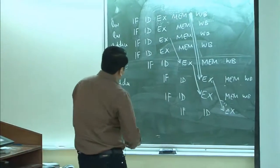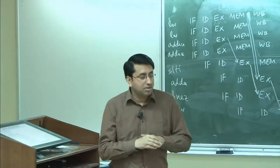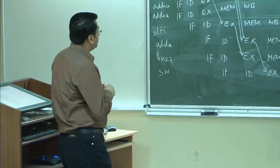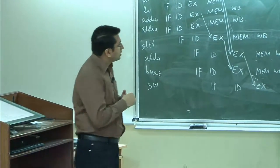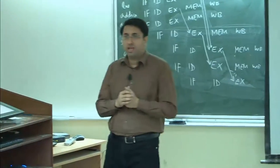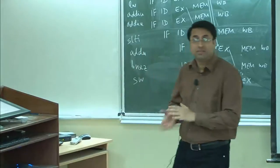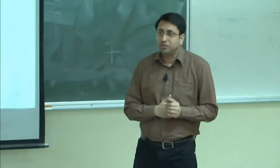That is pretty much just the best we can do, even if I give you the freedom of executing an unlimited number of instructions every cycle. The question is: how can we go beyond this? Can we, or is it the theoretical limit? Given this particular loop which executes 100 times — we have looked at just one iteration — can we improve this any further?